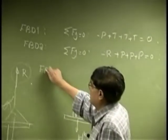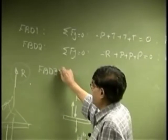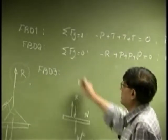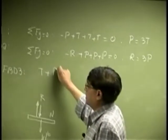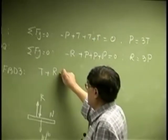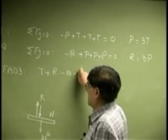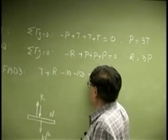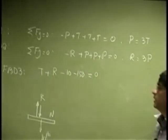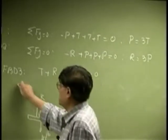Then we look at free body diagram number 3. If T is going up, then R is going up. Then you have negative 10, negative 150, and that goes to 0.